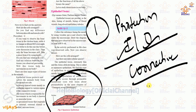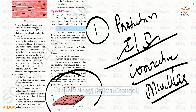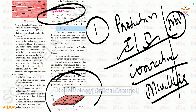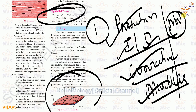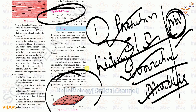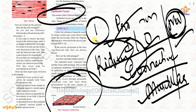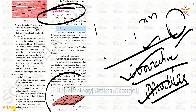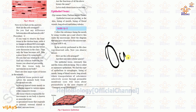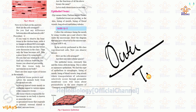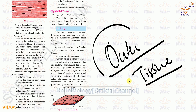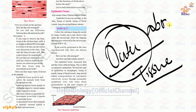Epithelial tissue also serves as connective tissue — connecting one place to another — and is responsible for muscular tissue and nervous tissue as well. Kidneys are also lined by epithelial tissues. The word 'epithelial' comes from 'epi' meaning outer or above, and 'thelium' meaning tissue — so it is the outer tissue.